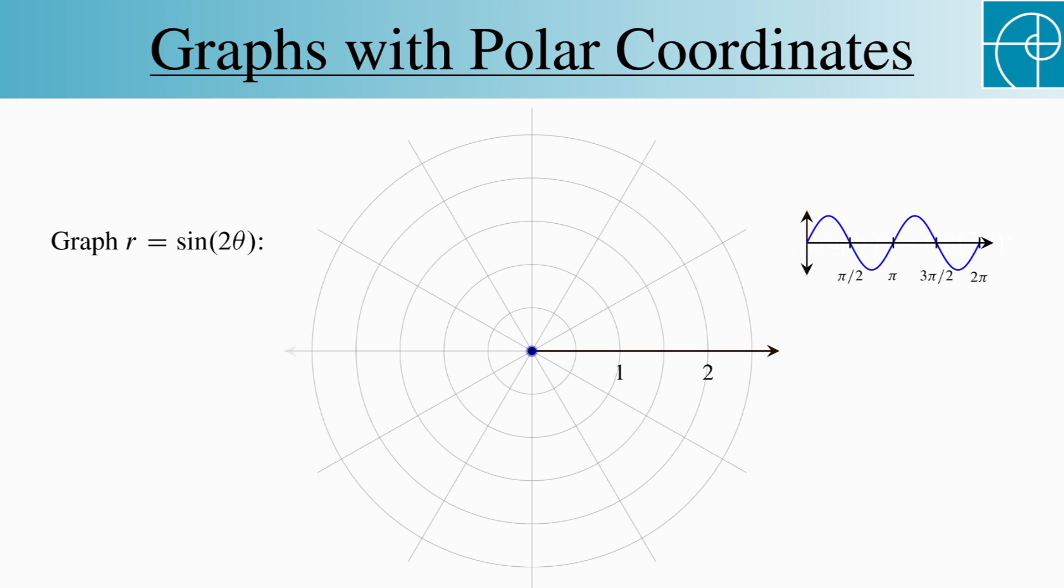We start again at 0, but now everything happens twice as fast as before. So instead of reaching 1 at pi over 2, it reaches it at pi over 4. Continuing to pi over 2, the graph returns to the origin. And we get this graph that looks like a flower petal.